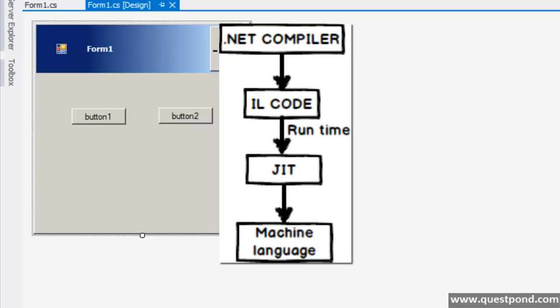As we have said in the first two videos, whenever you compile your C# code or VB.NET code, the .NET compiler does not do a full compilation — it actually does a partial or half compilation. This half-compiled code is termed as IL Code. Later on, when you run your exe or web application, there is a thing called JIT — Just-In-Time compiler — which comes into picture and, depending on what code your application wants to run at that time, takes that code and converts it to optimal machine language for that environment, whether it's Windows x86 or x64.